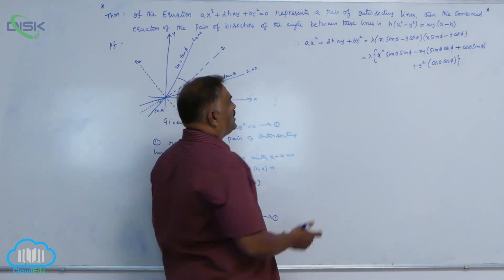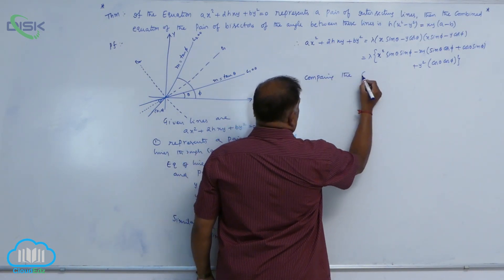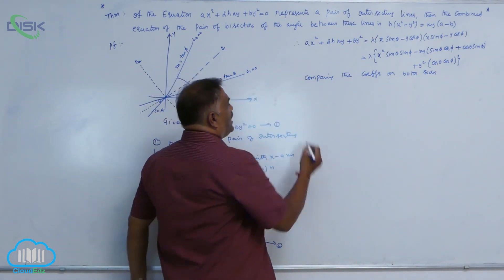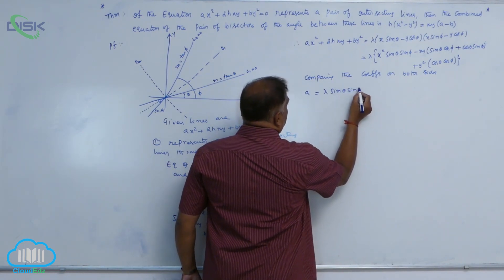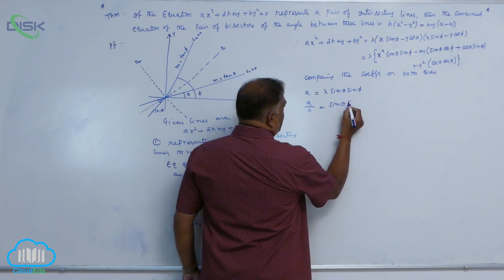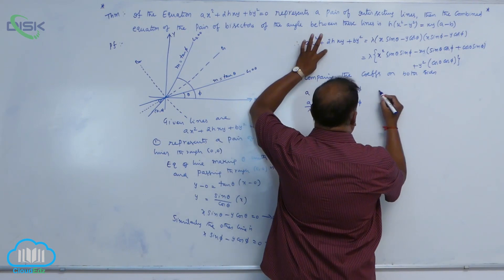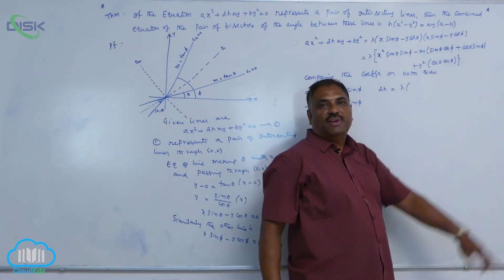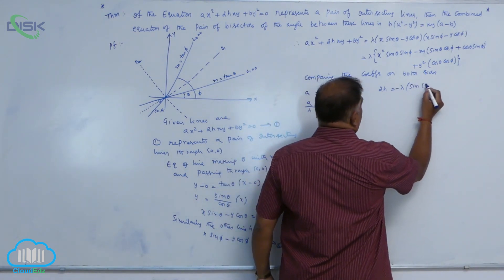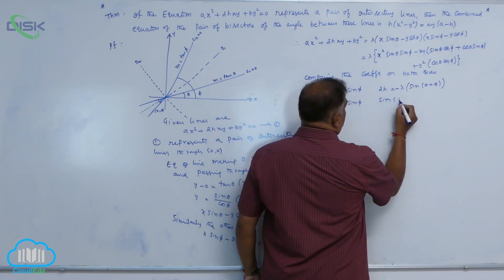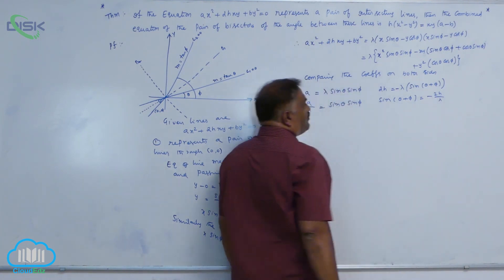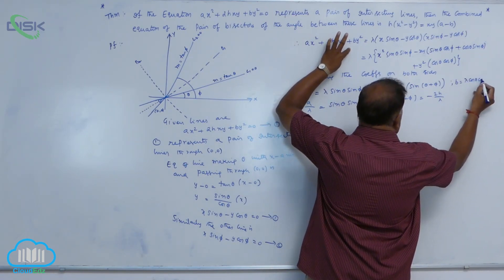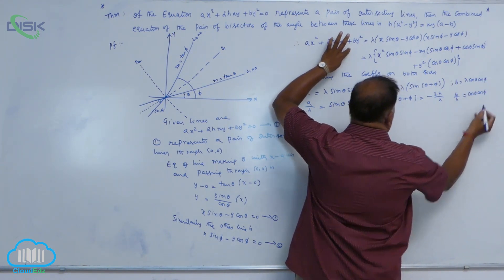Comparing the coefficients on both sides: the x² coefficient gives a = λ sin θ sin φ, so a/λ = sin θ sin φ. The xy coefficient gives 2h = -λ sin(θ + φ), using the identity sin A cos B + cos A sin B = sin(A + B), so sin(θ + φ) = -2h/λ. The y² coefficient gives b = λ cos θ cos φ, so b/λ = cos θ cos φ.